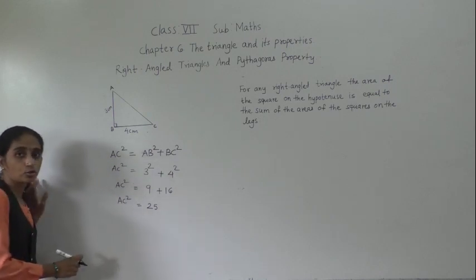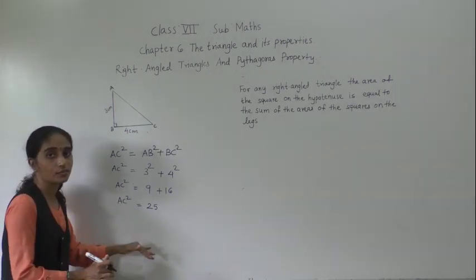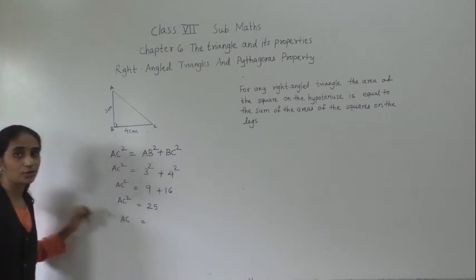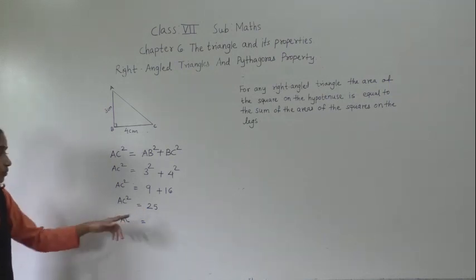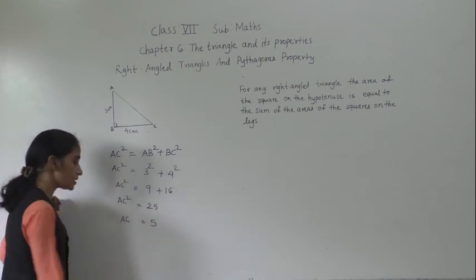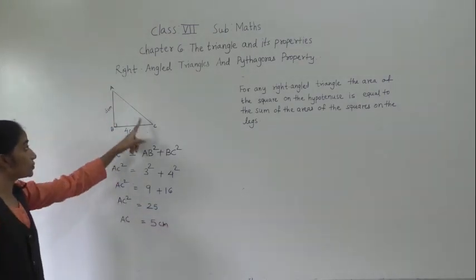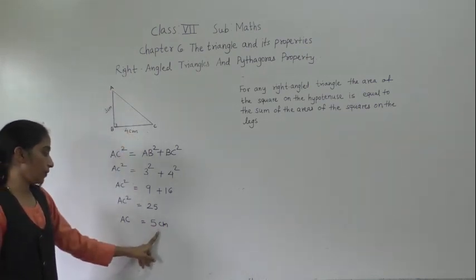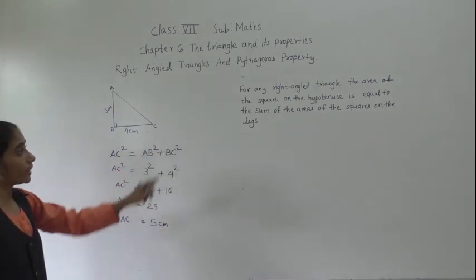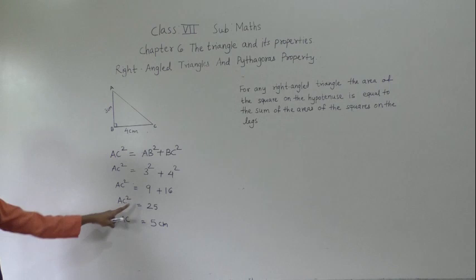We have to find the square root of both sides. The square root of AC² is AC. The square root of 25 — since 25 is the square of 5 — is 5. So the hypotenuse equals 5 cm. The area of the square on the hypotenuse equals the sum of the areas of the squares on the legs: square of these two legs equals the hypotenuse square.